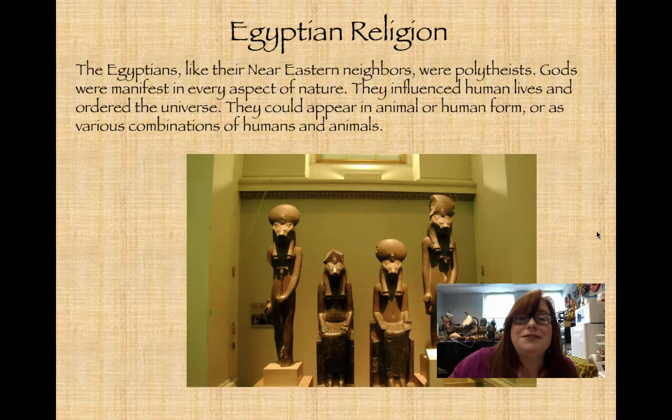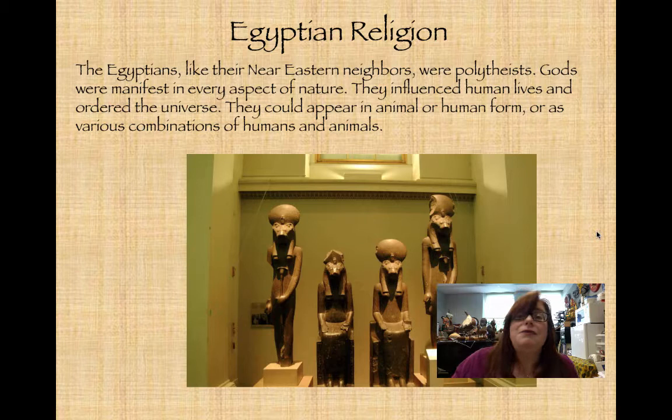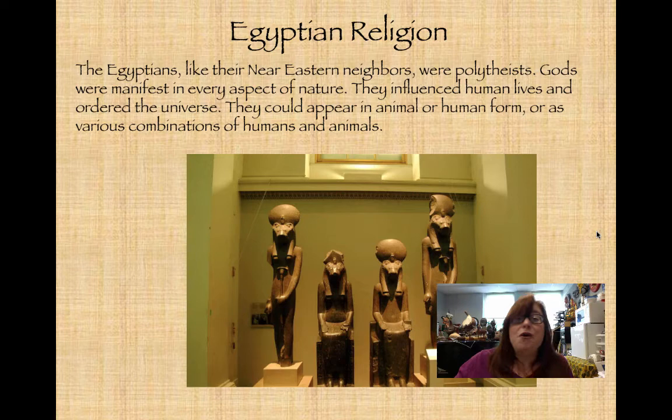In the Near East at this time, everyone was polytheist — worshiping multiple gods. Gods were manifest in every aspect of nature, representing forces of nature or different types of people, influencing human lives and ordering the universe. For the ancient Egyptians, gods could appear in animal or human form, or as various combinations of human and animal.